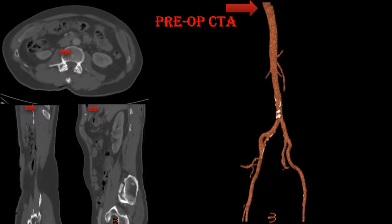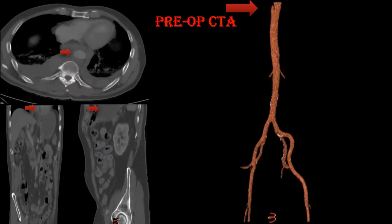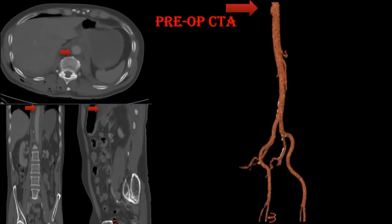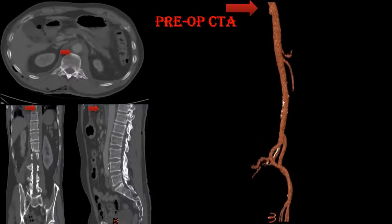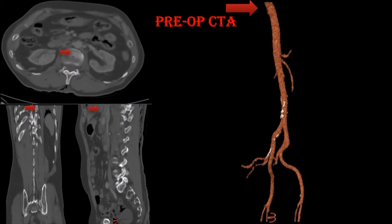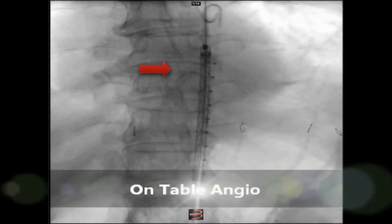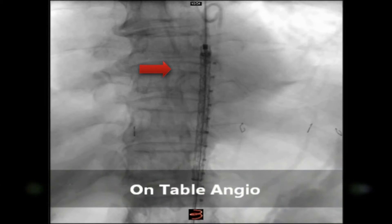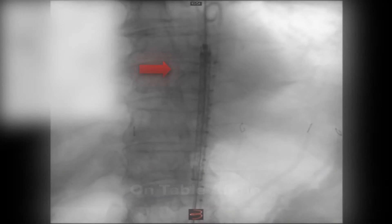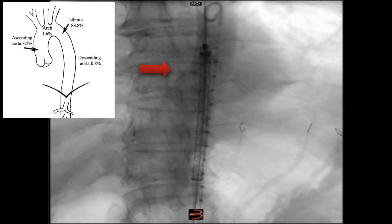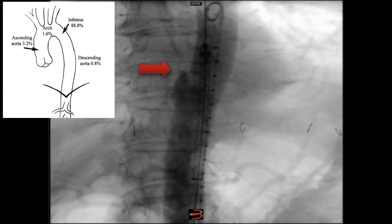Complete transection of the distal thoracic aorta occurs in 2 out of 300 cases of traumatic aortic pathology. On-table angiogram confirmed the total aortic transection at the thoracic level. We used the tuck-and-go technique at lateral 6 to 8 to protect against disruption of the transected aorta.